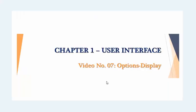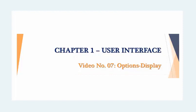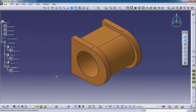Hello there! In this video lesson, I will present the Options Display Dialogue. The Display section in the Options Dialogue contains settings that control how models display in CATIA. I'm going to cover some important settings in this dialogue.